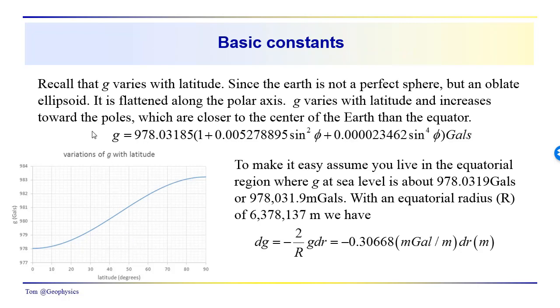Just to tie back into some basic concepts, remember that g varies with latitude. The earth is not a perfect sphere. It's an oblate spheroid, flattened along the polar axis. g varies with latitude and increases towards the poles.